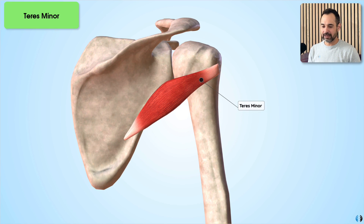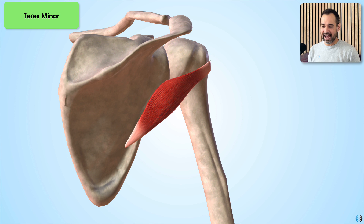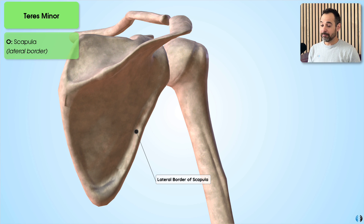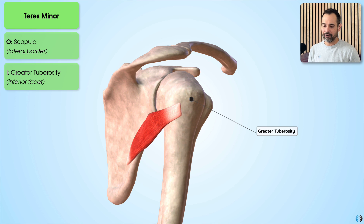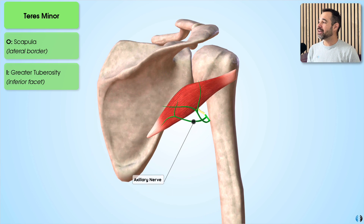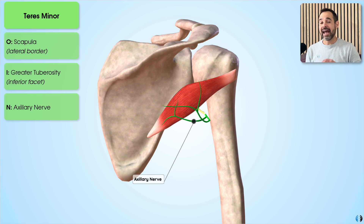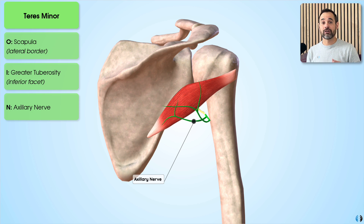Next we have teres minor. This muscle originates at the lateral border of the scapula and also inserts into the greater tuberosity — specifically the inferior facet, the inferior part of the greater tuberosity. So supraspinatus inserts into the superior facet, infraspinatus into the middle facet, and teres minor into the inferior facet. The nerve supply for teres minor comes from the axillary nerve, which also supplies the deltoid. When injured, it can give palsies of these two muscles — common causes include a proximal humeral fracture or an anterior shoulder dislocation.